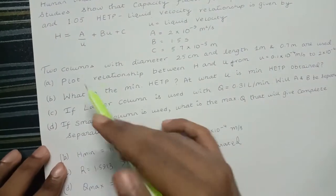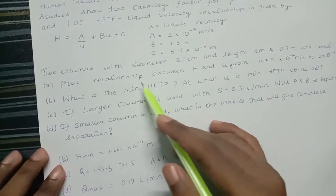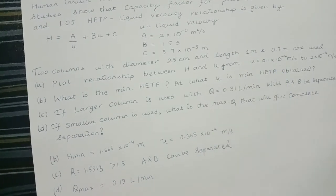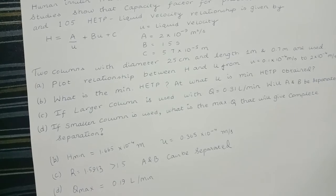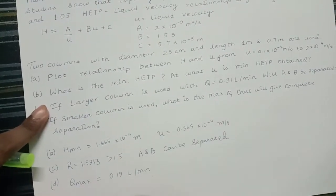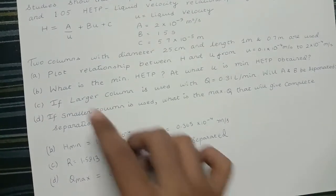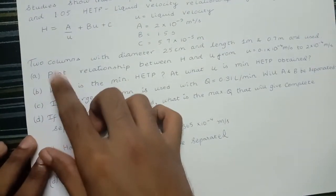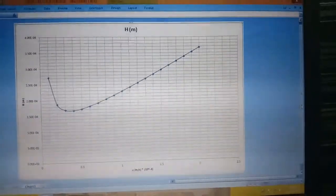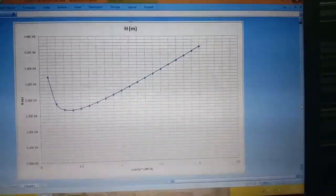Now I was about to show you the plot between H and u, ranging from 0.1 × 10⁻⁴ meters per second to 2 × 10⁻⁴ meters per second. This is a recap of the values we got from the previous video. We will now look at that plot.